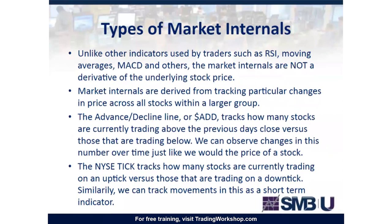There are certain types of market internals. We're going to talk about the ADD and the NYC TIC. Unlike other indicators used by traders — such as RSI, moving averages, MACD — those are all derivatives of price, whereas market internals are derivatives of the underlying market conditions. The advance-decline line tracks how many stocks are currently trading above the previous day's close versus those trading below. The NYC TIC tracks how many stocks are currently trading on an uptick versus those on downticks, and we can track moves in this as a short-term indicator.